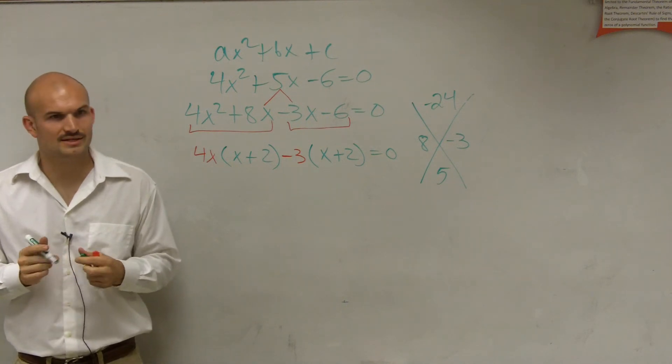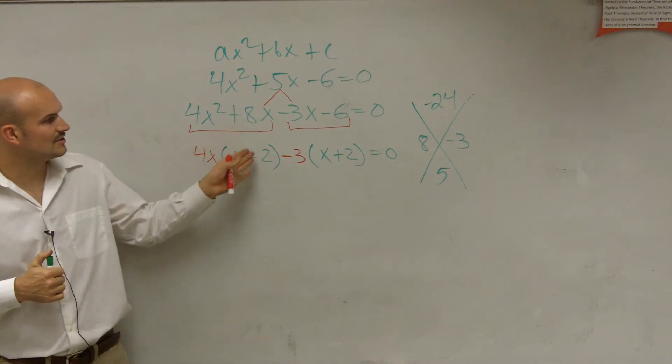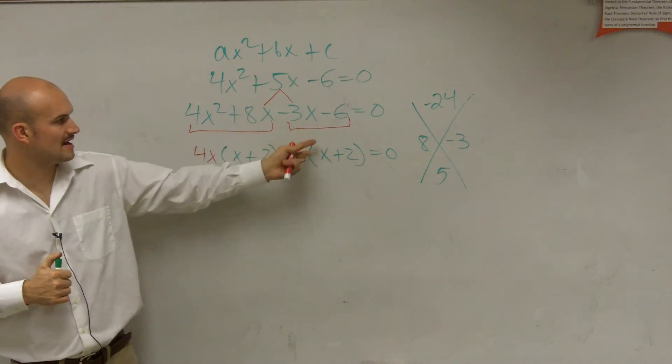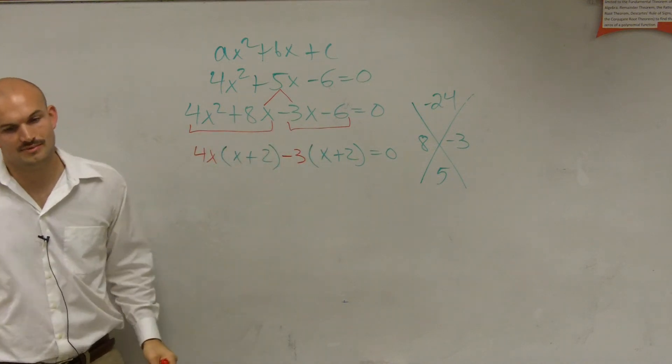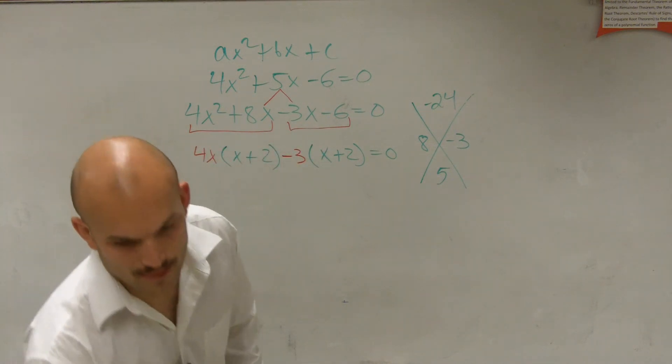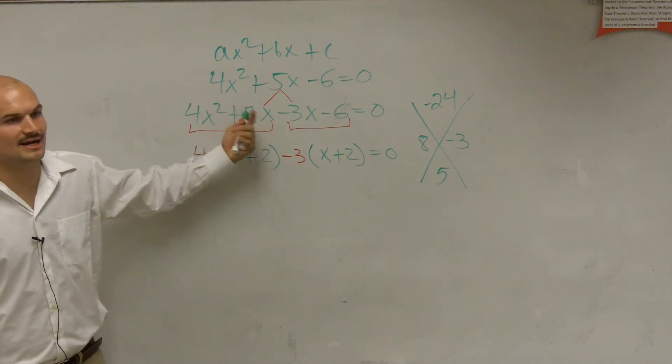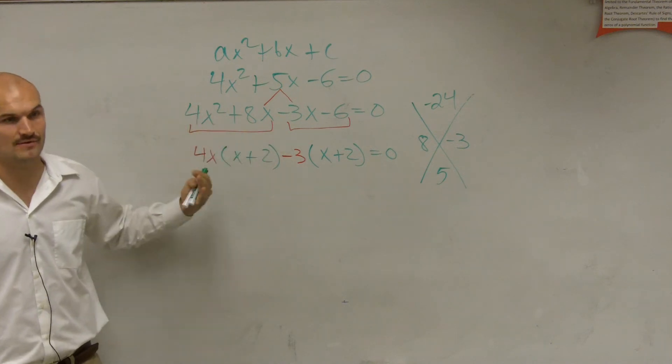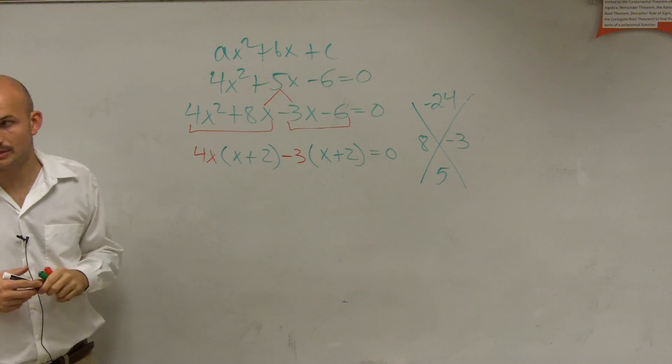You guys kind of see what I just did with that? So I factor each one of these separately out. I factored a negative 3 out of these two terms, and I factored a 4x out of these two terms. Yes. When you're factoring out, it's kind of like the same thing as dividing out. OK? So you're dividing out a 4, which will just leave you with a 2.